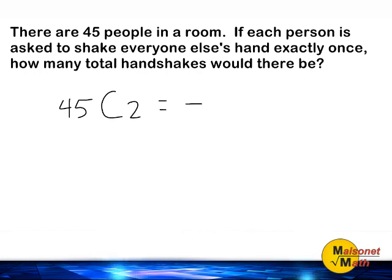To solve a combinations problem, start by writing a fraction bar, and write the total number of elements for your numerator, and the total number of elements you are combining at one time as your denominator.